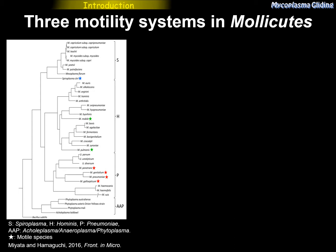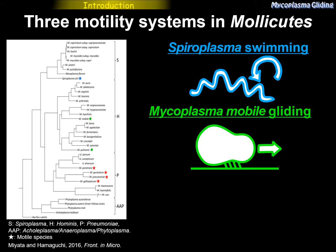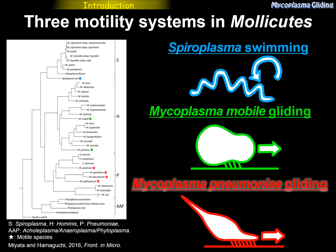A class of Mollicutes bacteria have three types of motility: Spiroplasma swimming, Mycoplasma mobile gliding, and Mycoplasma pneumoniae gliding. These two gliding systems have no homology in their genes or proteins, so they are completely different.